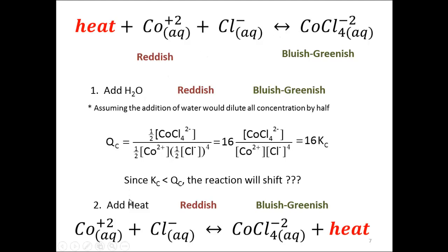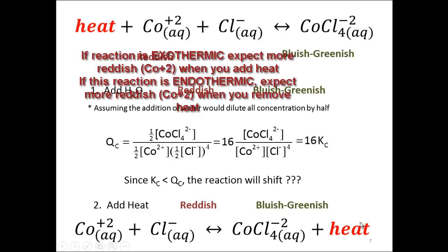To determine if the reaction is endothermic or exothermic, place the test tube in a boiling water bath and observe the color change. If the reaction is exothermic, adding heat adds more product, so the equilibrium shifts to the left, making something more reddish. If it's endothermic and you remove heat in an ice bath, the reaction also shifts to the left, making something more reddish. You'll do both a boiling water bath and an ice bath in this experiment.